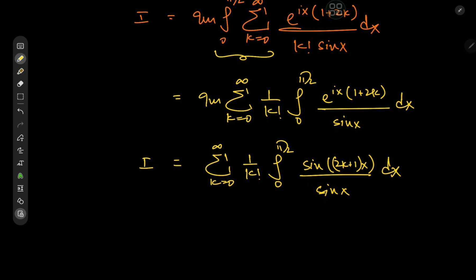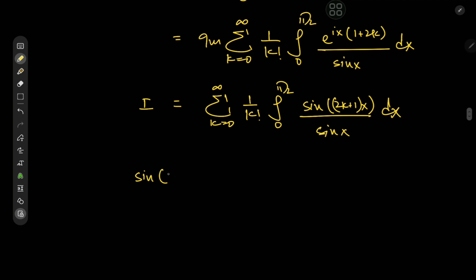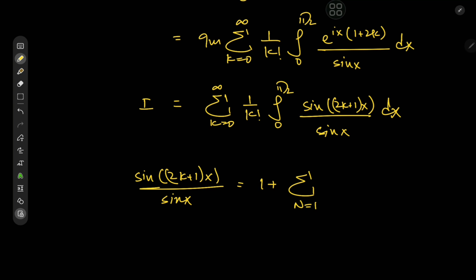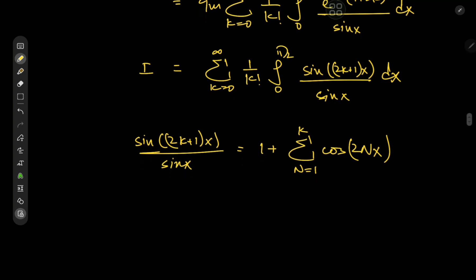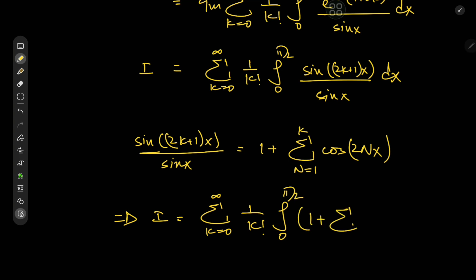The integral we're dealing with can be evaluated using the Dirichlet kernel identity: sine(2k+1)x divided by sine x expands as 1 plus the sum over n from 1 to k of cosine(2nx). So the target integral I equals the sum over k from 0 to infinity of (1/k factorial) times the integral from 0 to π/2 of 1 plus the sum over n from 1 to k of cosine(2nx), dx.